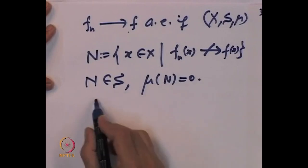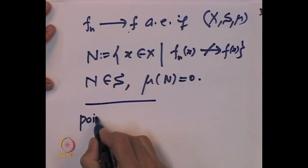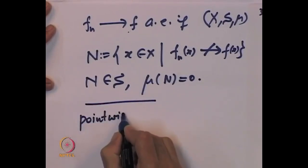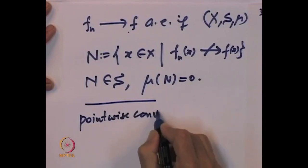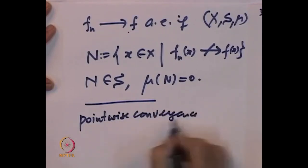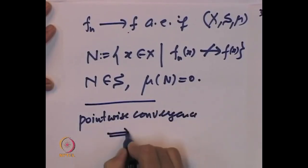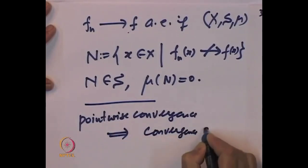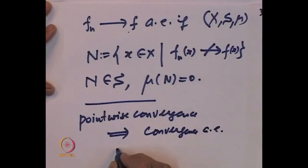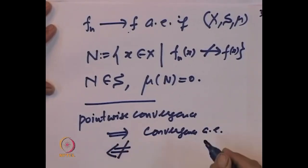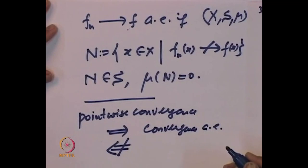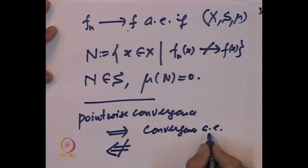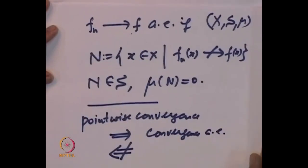Obviously pointwise convergence implies convergence almost everywhere. One can construct obvious examples to show that the other implication need not hold — convergence almost everywhere need not imply pointwise convergence.